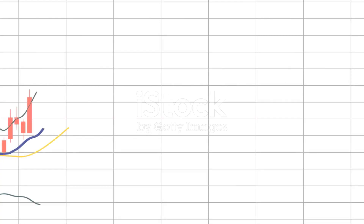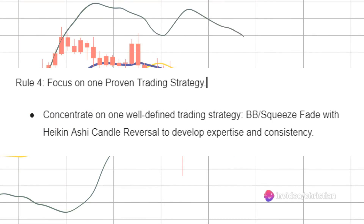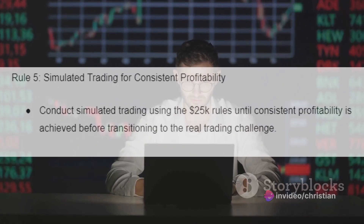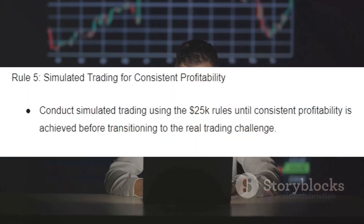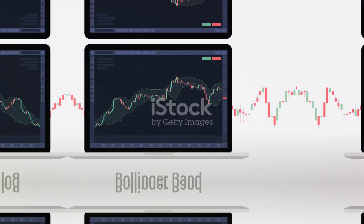Concentrate on one well-defined trading strategy — BB squeeze fade with Heiken-Ashi candle reversal — to develop expertise and consistency. Conduct simulated trading using the $25k rules until consistent profitability is achieved before transitioning to a real trading challenge.